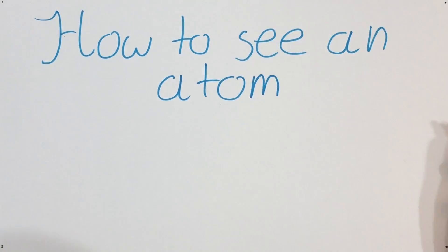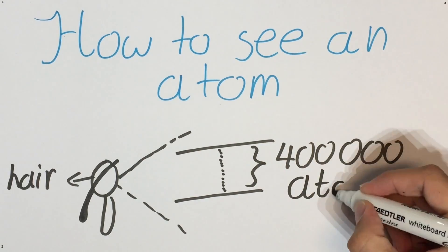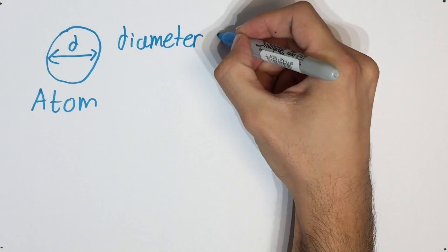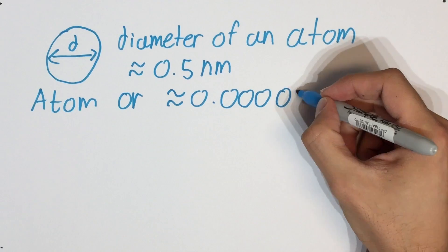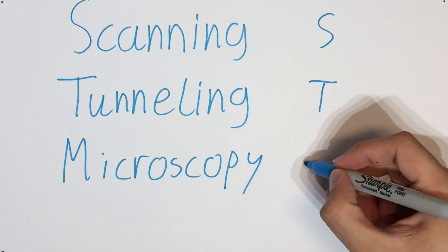An atom is so small that the diameter of a single hair is roughly 400,000 atoms thick. Hence scientists needed to come up with a clever solution in order to image an atom. This is achieved through scanning tunneling microscopy or STM.